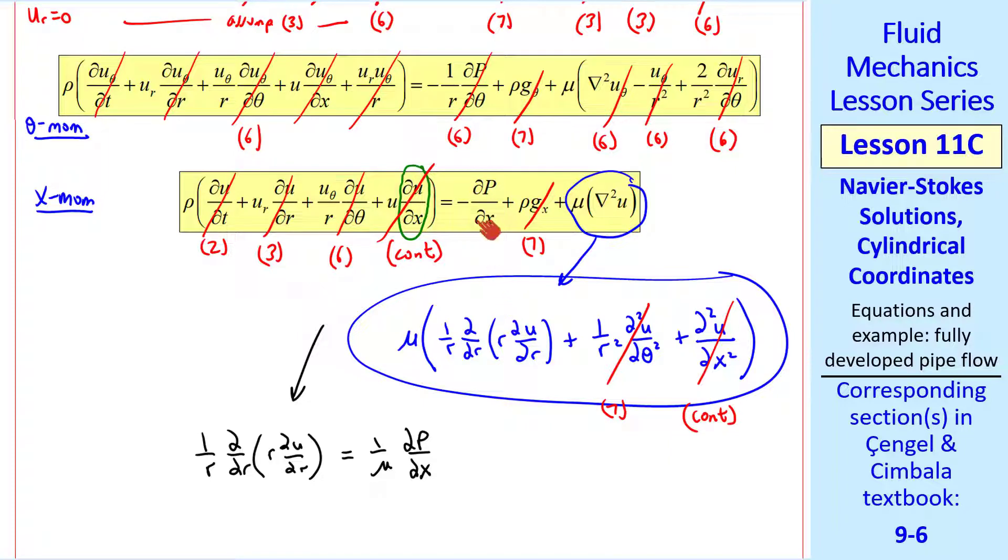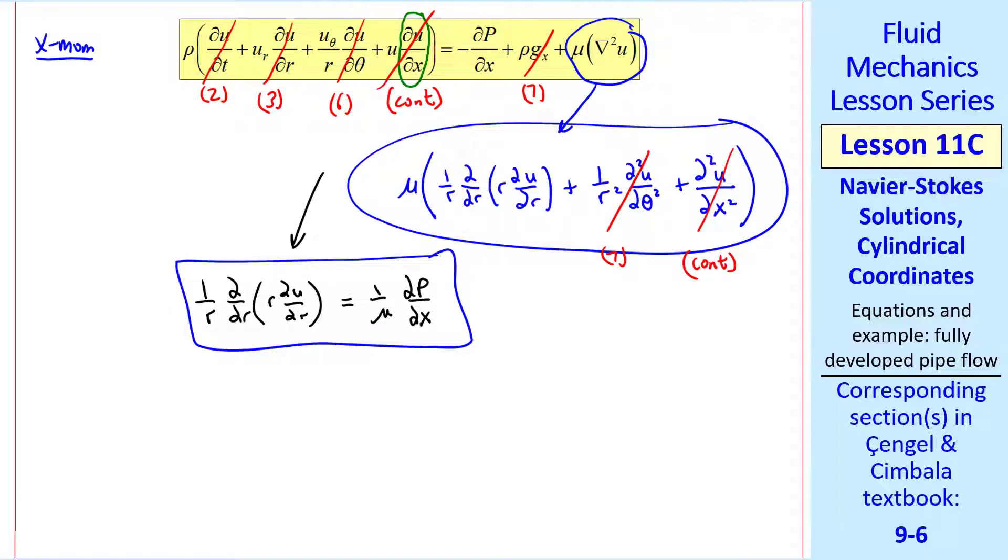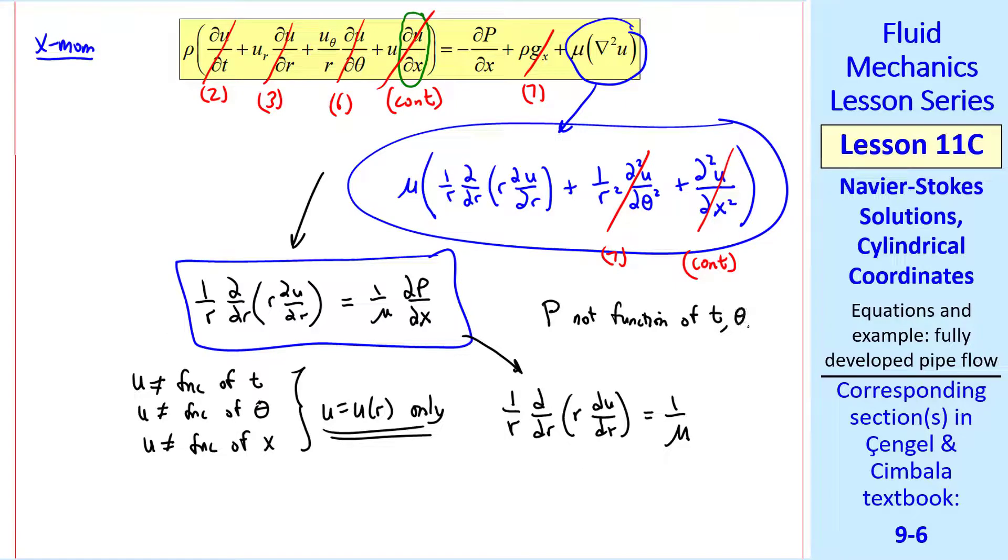I'll put this term on the left and the pressure term on the right. And I divide by μ. But let's think about these partial derivatives. u is not a function of time since this flow is steady. It's not a function of theta since this flow is axisymmetric. And it's not a function of x since it's fully developed. In fact, u is u of r only. So we can turn these dels into d's, total derivatives. That will make our life a lot easier. Similarly, p is not a function of time or theta or r. p equals p of x only. So similarly, we change these partial derivatives into total derivatives.